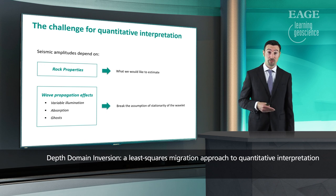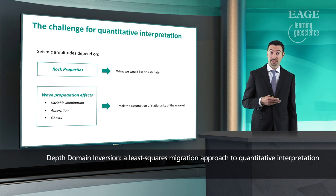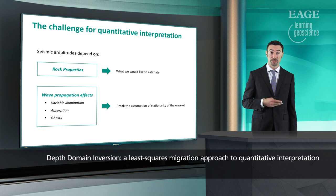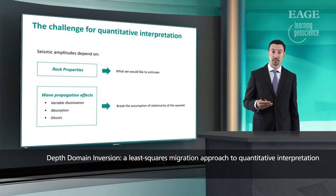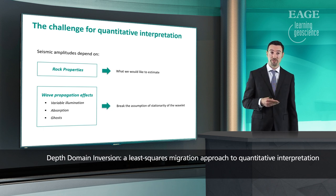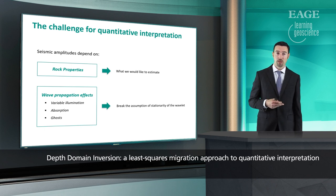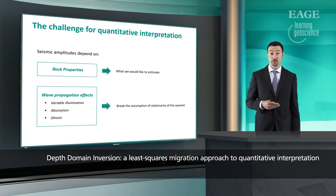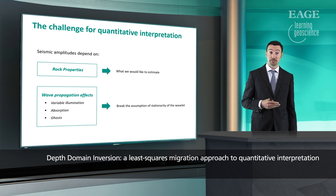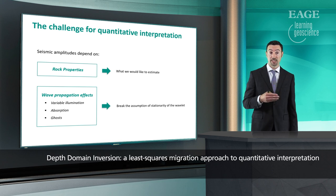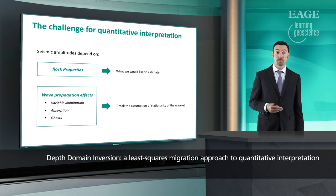Quantitative interpretation workflows assume that the variations in seismic amplitudes are directly linked to variations in the underlying rock properties, and that all the wave propagation effects have been compensated for during processing. When this assumption is met, it is possible to derive stationary deterministic operators to link the angle-dependent earth reflectivity directly to the seismic amplitudes, and this is a key input for seismic AVO inversion.